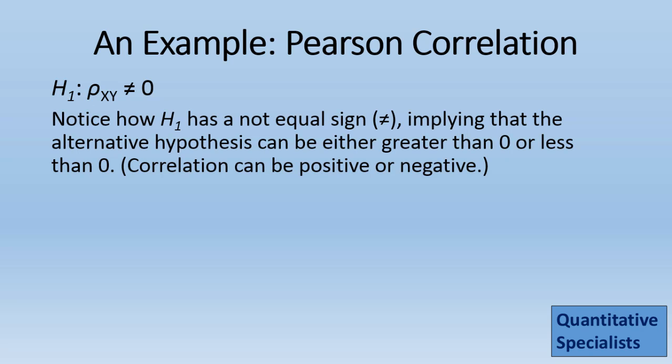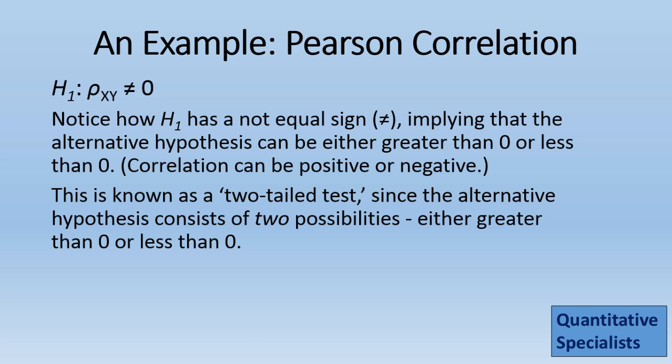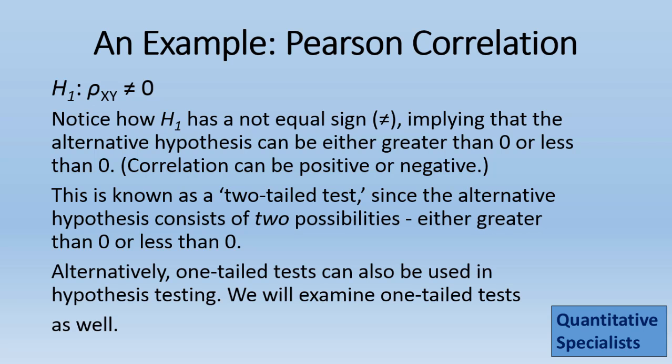Notice how the alternative has a not-equal sign, implying that the alternative hypothesis can be either greater than 0 or less than 0 — in other words, correlation can be positive or negative. This is known as a two-tailed test, since the alternative hypothesis consists of two possibilities: either greater than 0 or less than 0. Alternatively, one-tailed tests can also be used in hypothesis testing, and we'll examine those in another video.